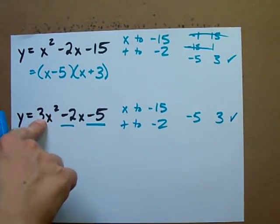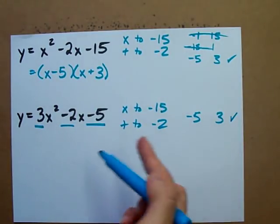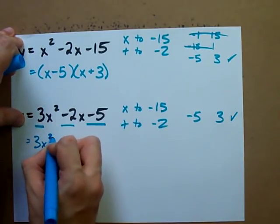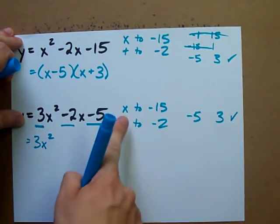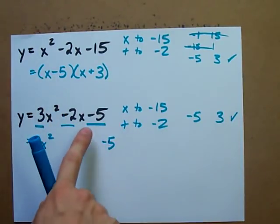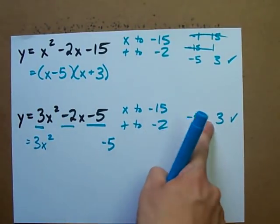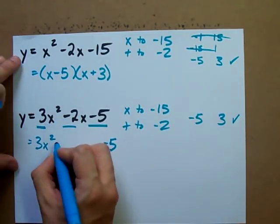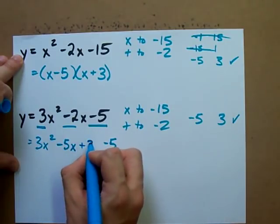But because we have something in front of the x squared, we have to do this in a bit tougher of a way. What we do is we write that first term and that last term just as they are. 3x squared minus 5. And we rewrite the middle term as these two here. Negative 2x as minus 5x plus 3x.